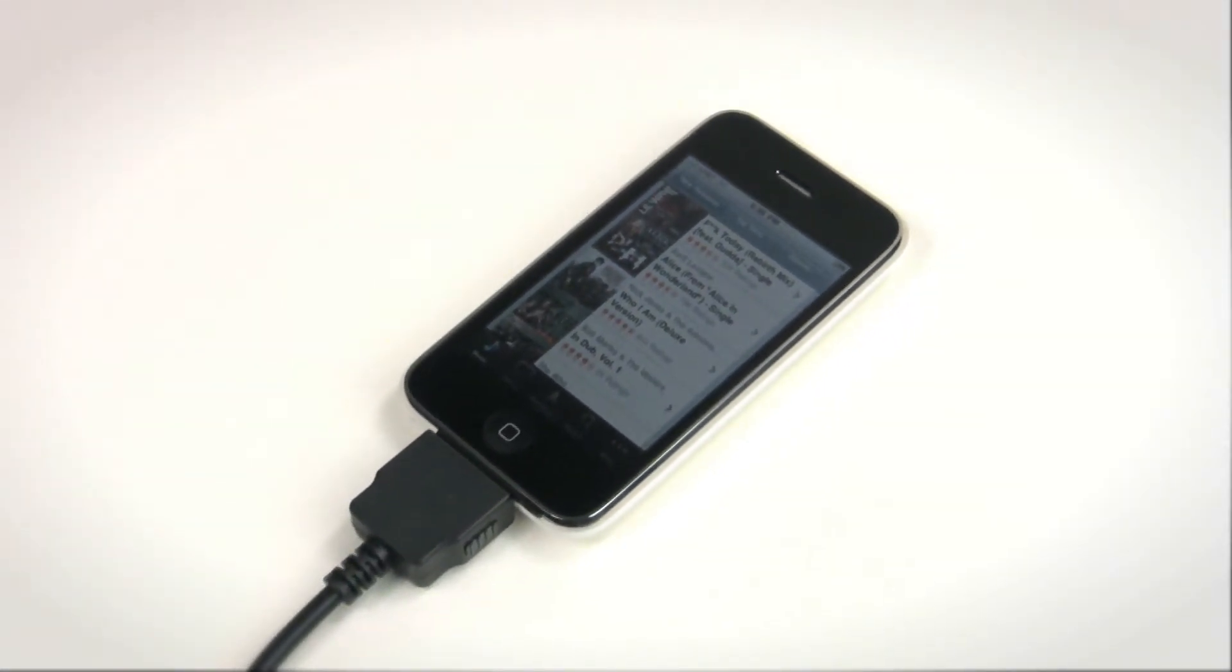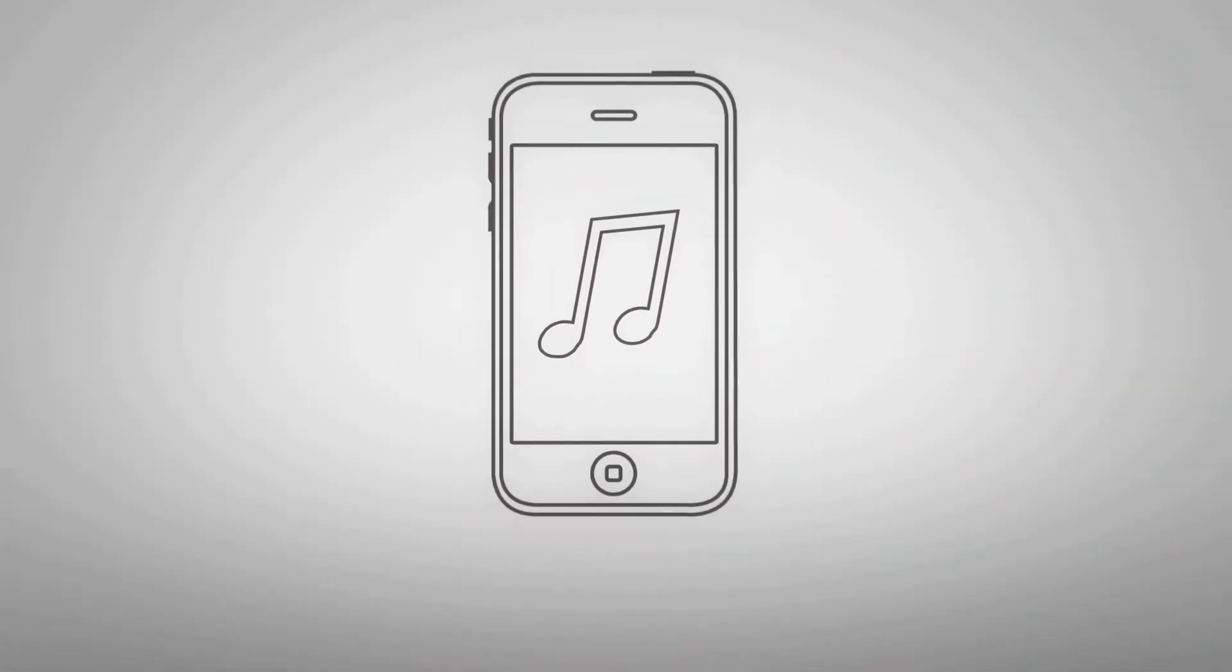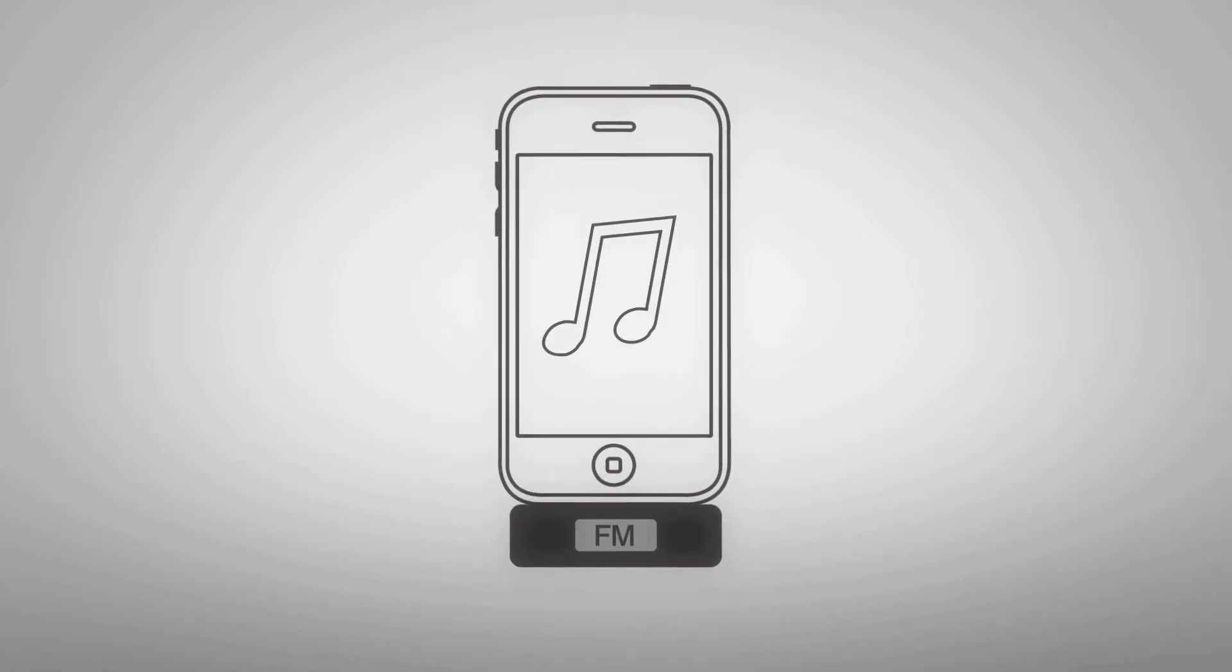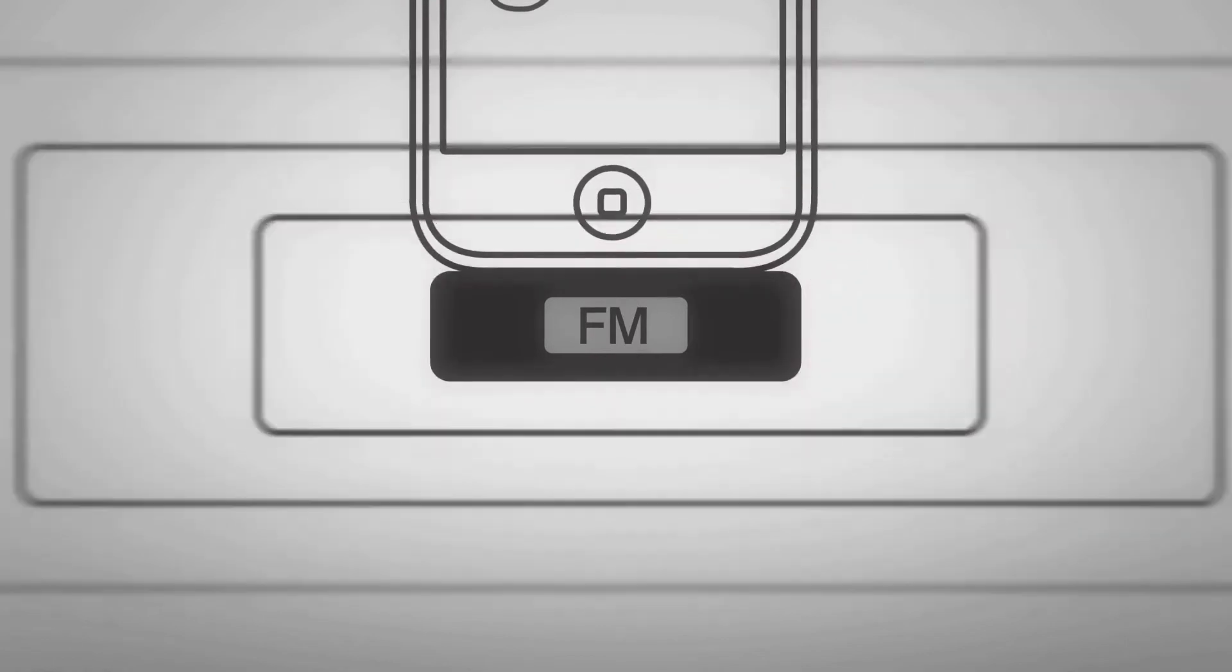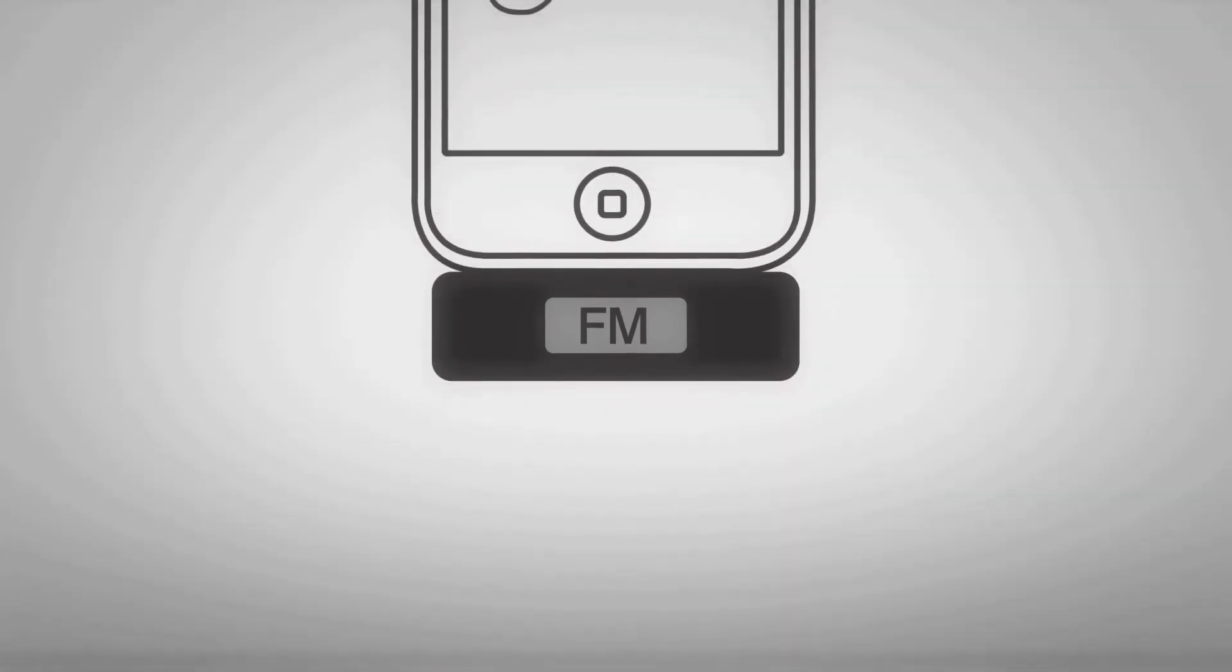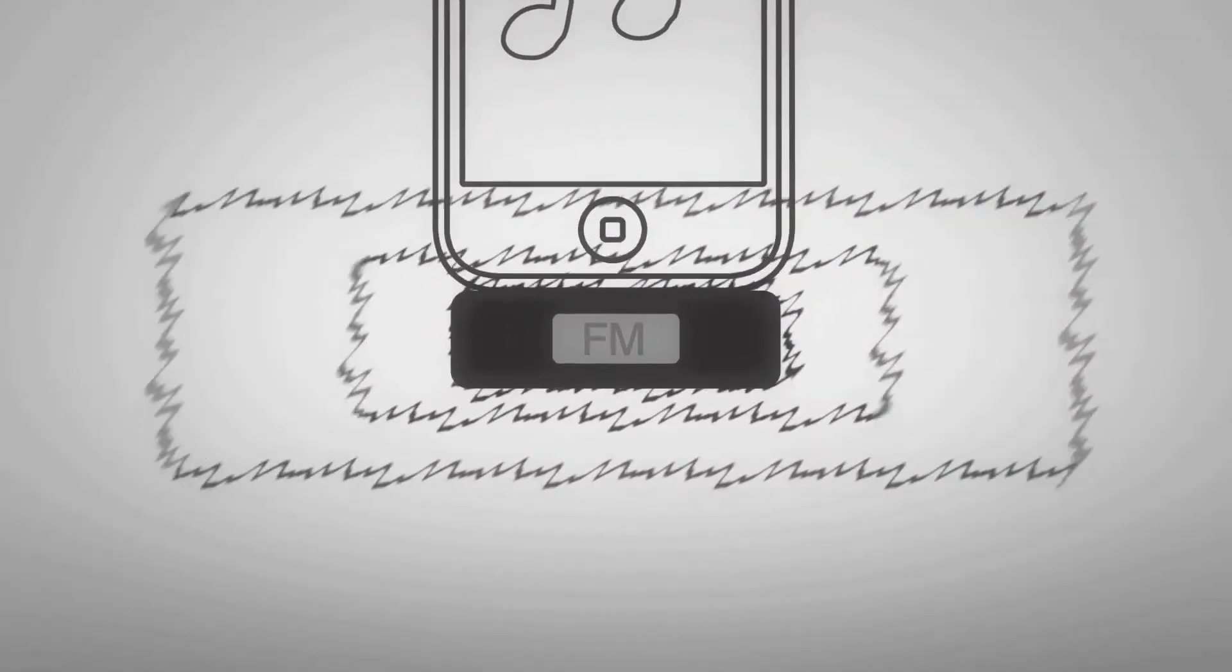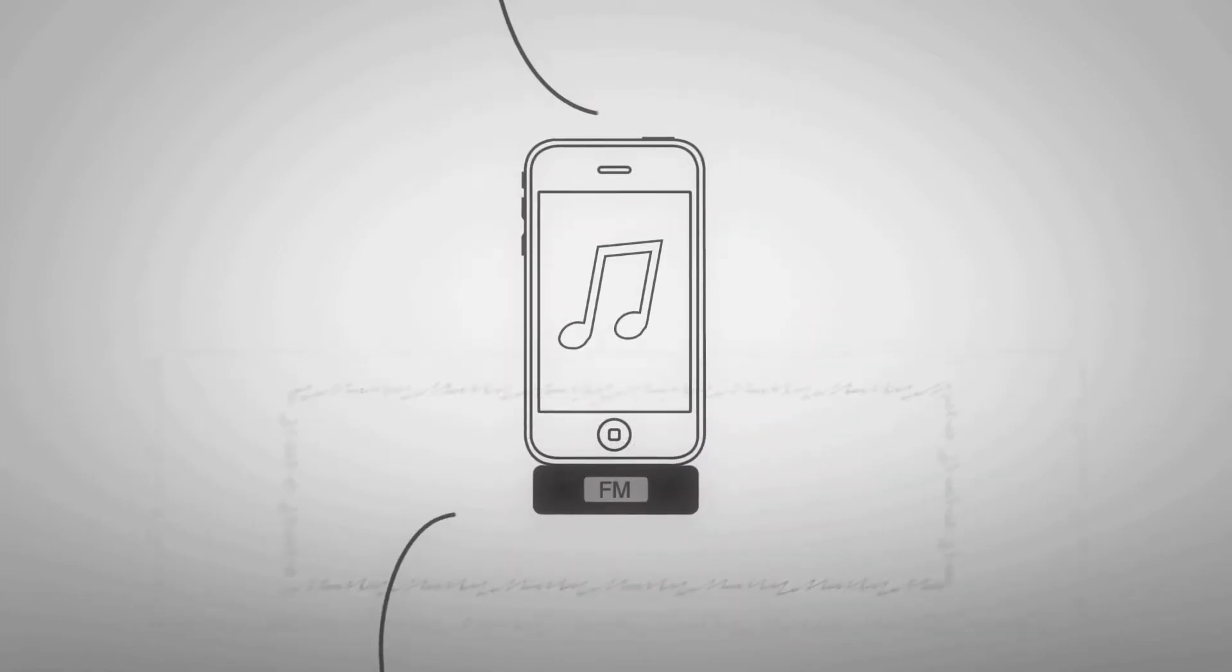Our iPod and iPhone integration solutions are pretty remarkable and unique when you compare them to other products out there. Traditionally, if a vehicle doesn't come from the factory with an iPod connection, the iPod or iPhone is connected using an FM transmitter, which uses a radio signal to talk to your receiver. And it's a pretty neat idea, but sound quality is just awful and it looks terrible.